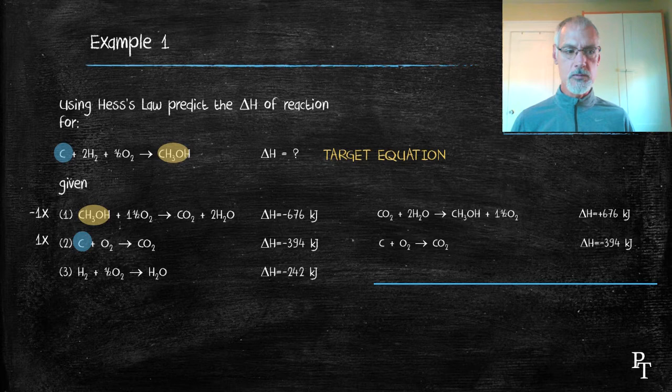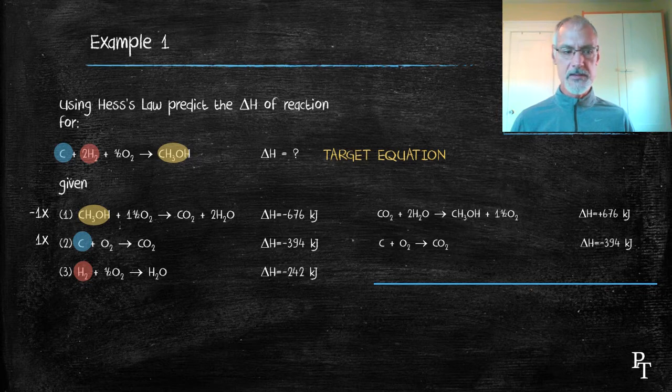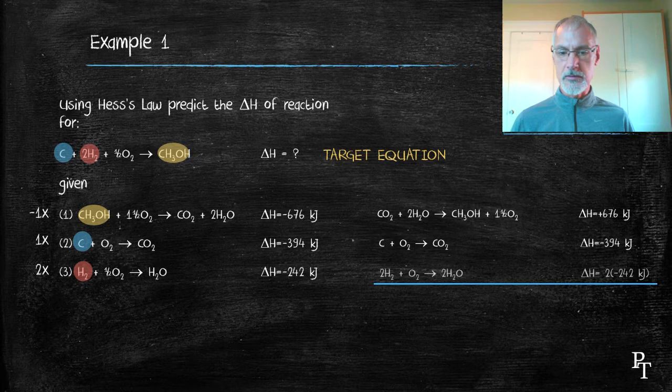Now my third and final equation, if I take a look at it, I notice the presence of hydrogen. Hydrogen is in both of these equations. In both of them, it's a reactant. But in my target equation, I require two hydrogens. So I'm going to double equation number three, as well as the associated heat term that goes with it.